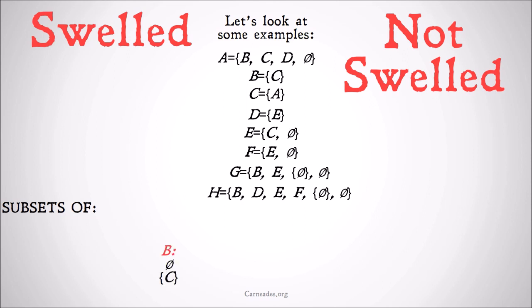Let's start with A. The members of A are B, C, D, and the null set. For something to be swelled it must contain all of the subsets of all of its members. The first member is B. The subsets of B are the null set and the set whose only member is C. A contains the set whose only member is C because A contains B, and B is equal to the set whose only member is C. B has two subsets; A contains both of them — the null set and B itself. So far so good: A contains all the subsets of B.